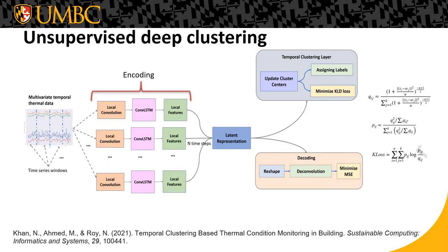We proposed a framework which performs deep temporal clustering using a deep neural network. The deep temporal clustering model simultaneously optimizes the combined loss of reconstruction and clustering. From this model, we can identify the location and the time of day for temperature variation across the inside building envelope. Temporal clustering assigns clusters to temperature and humidity data points so that cluster assignments remain coherent across successive time segments by finding a set of change points and assigning labels to them.